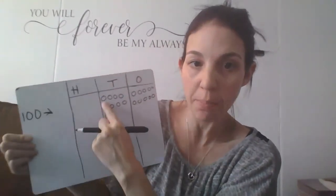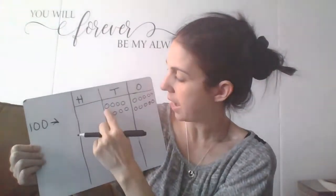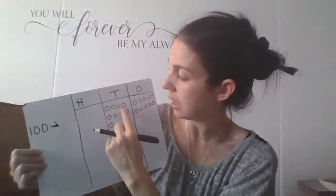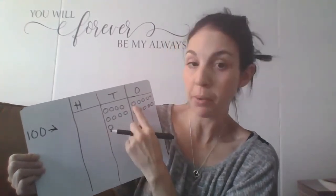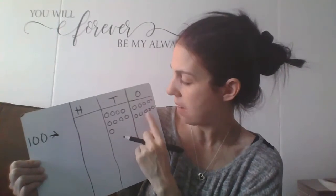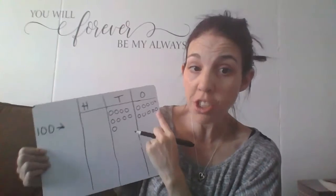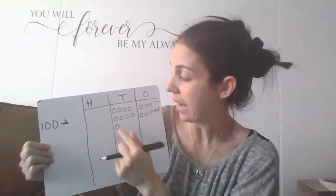So if I were to count — you guys can count along at home — we're going to count by 10 to see if this shows 100: 10, 20, 30, 40, 50, 60, 70, 80, 90. Now we're going to count by 1: 91, 92, 93, 94, 95, 96, 97, 98, 99, 100. So 100 can be shown as 9 tens and 10 ones.